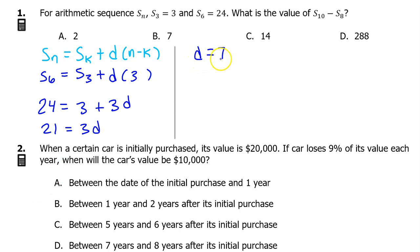Now that we know the common difference, we can write the equation S_n equals S_k, which is S_3, plus D, which is 7, times (n minus k). In this case, n minus 3. Remember that S_3 is 3, so now we have an equation for the sequence. We can use this equation to find S_10 minus S_8.